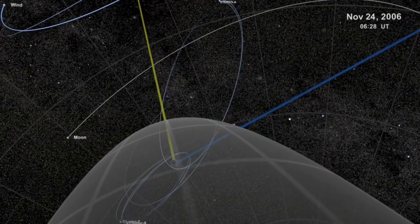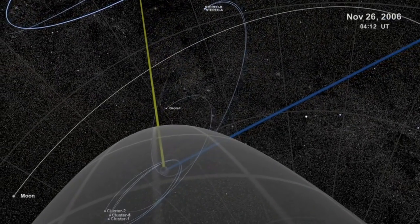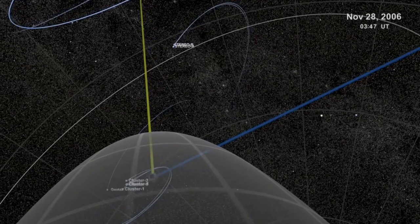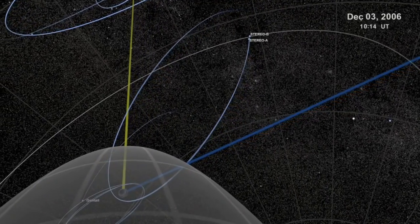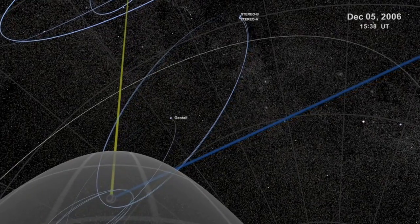Geotail makes a lazy loop all alone. The two Stereo satellites fly in relatively close formation, but they won't stay that way for long. I'll show you how in a moment, but the point is, navigation out here is harder than it looks.